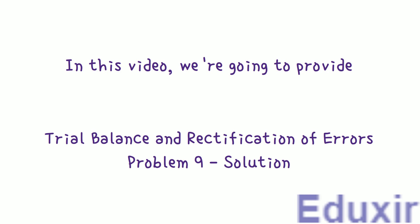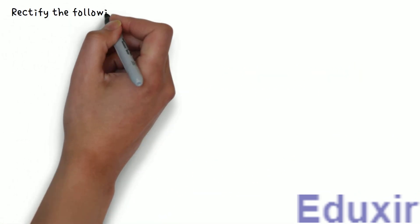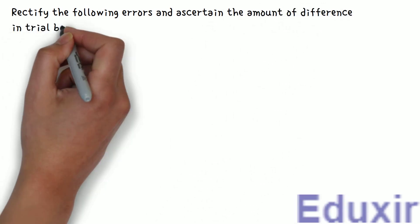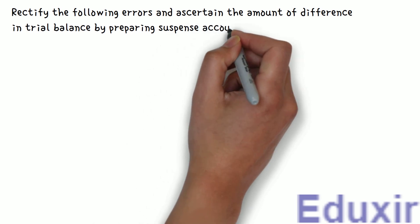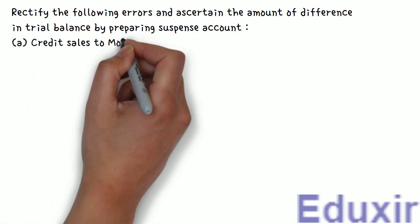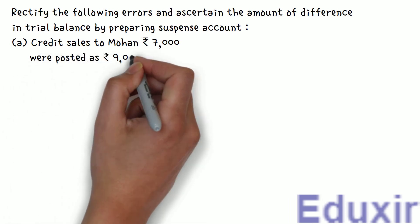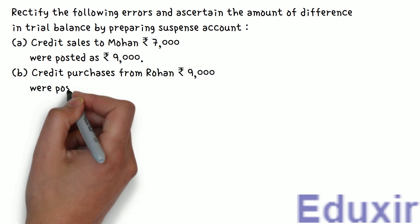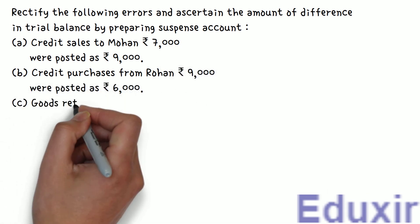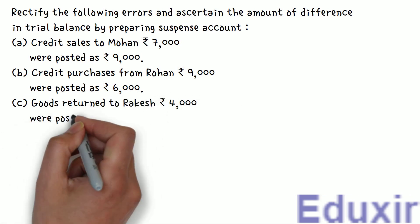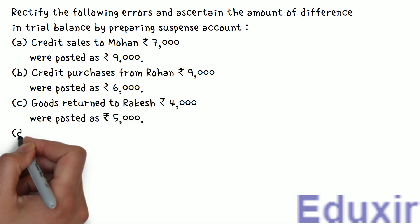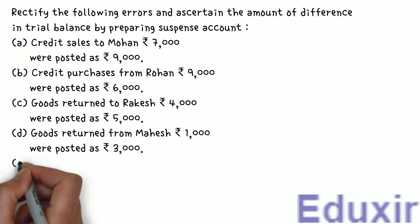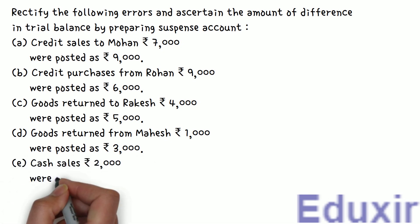The problem statement is as follows: Rectify the following errors and ascertain the amount of difference in trial balance by preparing a suspense account. A: Credit sales to Mohan, 7000 rupees were posted as 9000 rupees. B: Credit purchases from Rohan, 9000 rupees were posted as 6000 rupees. C: Goods returned to Rakesh, 4000 rupees were posted as 5000 rupees. D: Goods returned from Mahesh, 1000 rupees were posted as 3000 rupees. E: Cash sales, 2000 rupees were posted as 200 rupees.